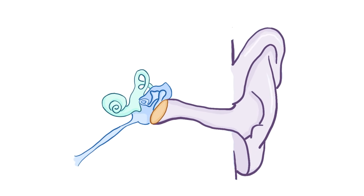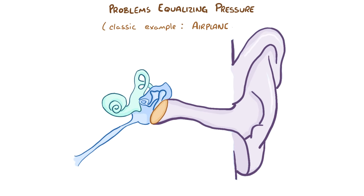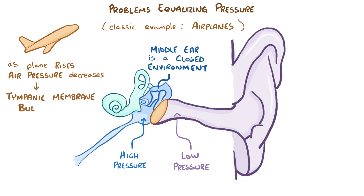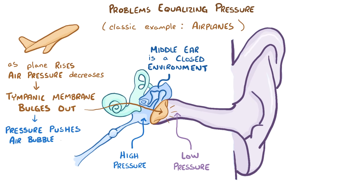The first and most common type of eustachian tube dysfunction relates to a problem equalizing pressure across the tympanic membrane, and a classic example is on an airplane. As the plane rises, the air pressure decreases. Since the middle ear chamber is a closed environment, its pressure stays relatively high and the tympanic membrane can start to bulge a bit into the outer ear. That increased middle ear pressure pushes a tiny bubble of air down the eustachian tube and into the nasopharynx, where it gets breathed out. This is sort of like what happens with a burp, where a bubble of air slips through the esophagus to relieve pressure.